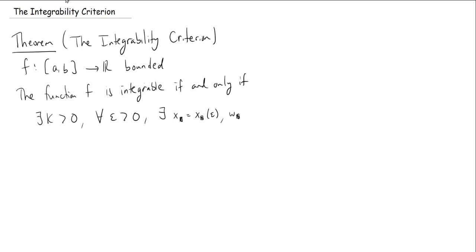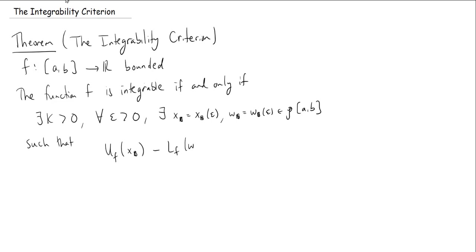So I'm going to have partitions W and X, and W also will depend on this epsilon. These are going to be partitions of the interval [a, b], such that the difference between the upper sum of X and the lower sum of W is less than epsilon. Integrability told me that my lower and upper integrals were equal, but those were defined in terms of infima and suprema of upper and lower sums. So this gets us back to that — we don't have to worry about the infima or suprema of all those; we just need to get some upper sum and some lower sum close enough for every epsilon.